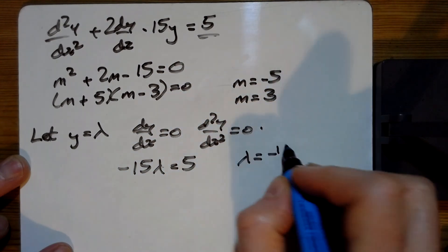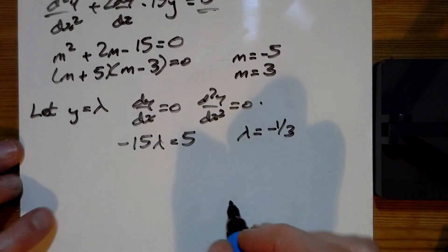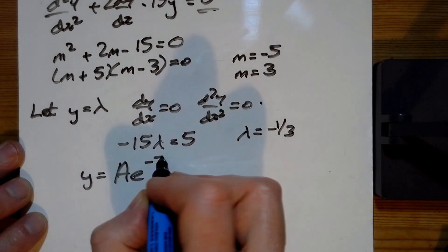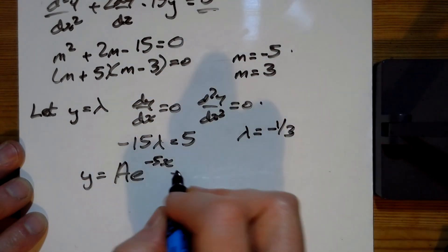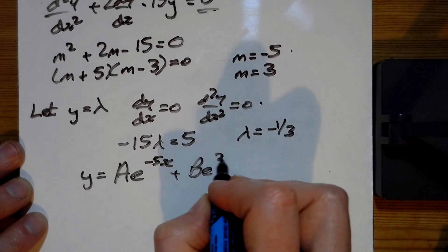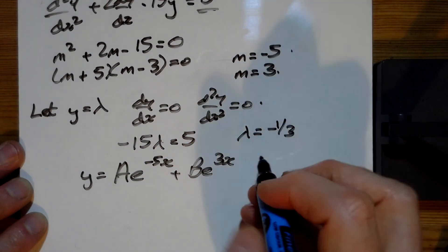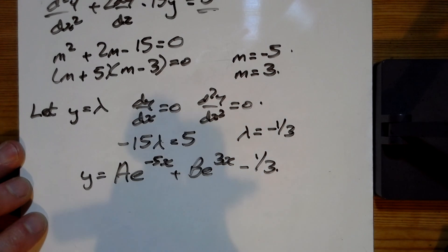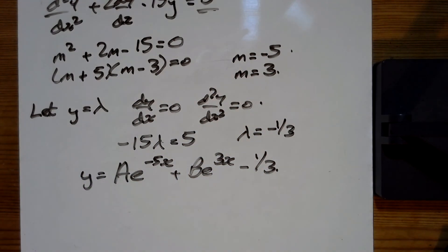So lambda is minus one third. And so our answer is y equals A e to the minus 5x from there, plus B e to the 3x from there, and minus one third from the particular integral on the right.